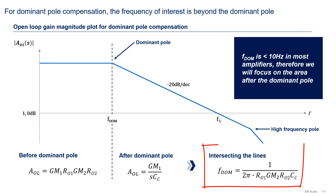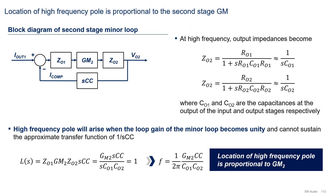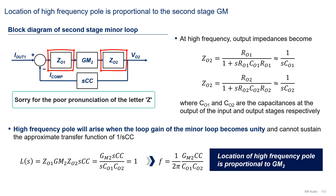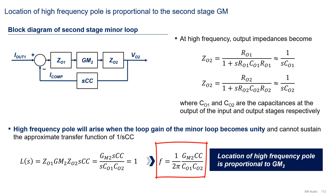Since in a properly designed two-stage amplifier the dominant pole lands at a very low frequency — typically less than 10 Hz — we will focus on the amplifier behavior past the dominant pole frequency. Now let's turn our attention to the high-frequency pole shown here. While there are several causes that lead to high-frequency poles, one of them is related to the inner feedback loop in the two-stage topology. At high frequencies, output impedances CO1 and CO2 become dominated by the capacitances at these nodes. The high-frequency pole due to the minor loop arises when the gain of the minor loop becomes 1, and there is not enough loop gain to sustain the approximate transfer function of 1 over YOS, or 1 over S·CC in dominant pole compensation. Since CO1 and CO2 are hard to calculate, the takeaway here is that we can move out the high-frequency pole by increasing the second-stage GM.